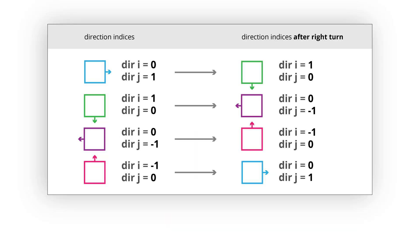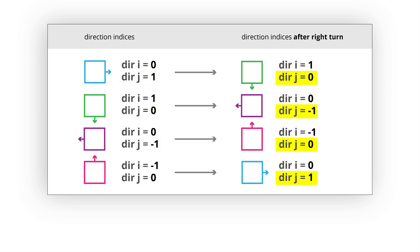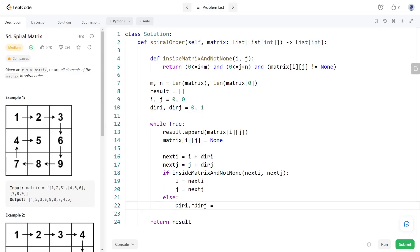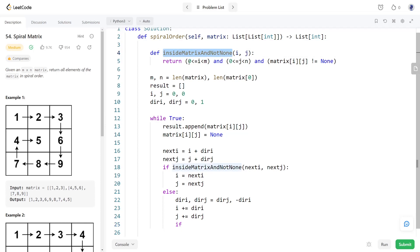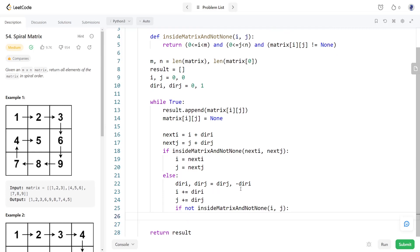Else, we need to take a right turn. One interesting thing about taking a right turn is that we can deduce a formula for updating the direction indices. From the table, the direction index di after a right turn equals the old dj, and dj after a right turn equals negative di. After updating the direction indices, we add them to the cell indices. We also check whether we can move forward after the right turn — if not, we have reached the end and break the loop.